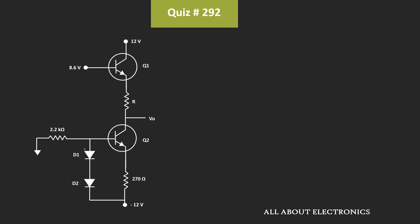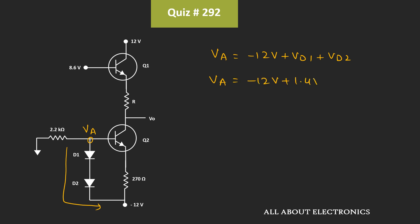First of all, let's say the voltage at this node is equal to Va. If we apply KVL in this particular path, then we can say that Va is equal to minus 12V plus Vd1 plus Vd2. That means Va is equal to minus 12V plus 1.4V, which is equal to minus 10.6V.